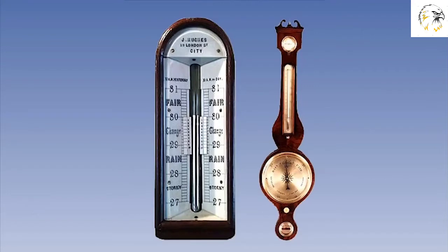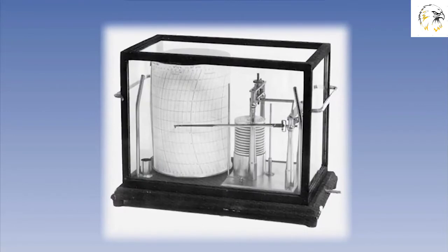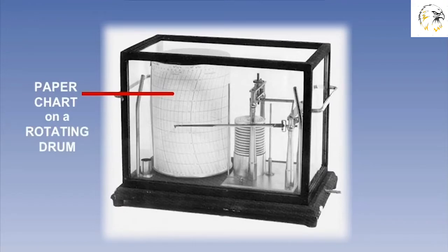Often, a special type of aneroid barometer, called a barograph, is used to record changes in atmospheric pressure over time. A barograph includes a pen that records the air pressure on a paper chart, mounted on a rotating drum.